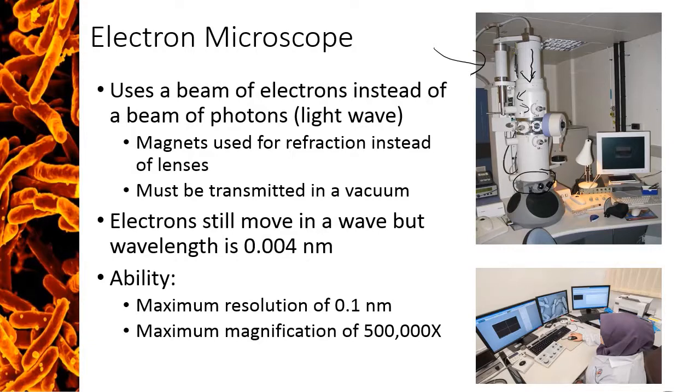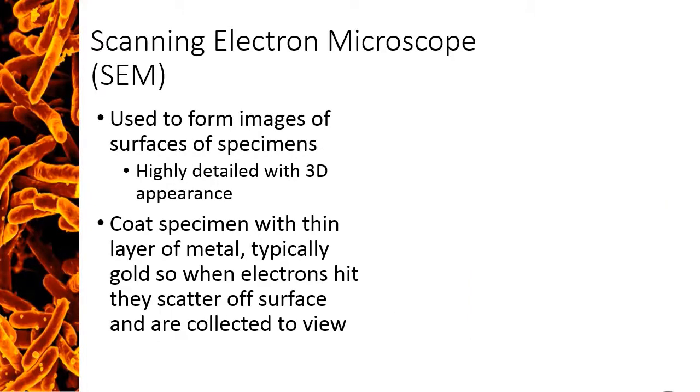There are two main types of electron microscopes, scanning electron microscopes or transmission electron microscopes. First, we'll look at a scanning electron microscope. Scanning electron microscopes are used to form images of specimen surfaces and produce very detailed 3D images. In order for an SEM to work, the specimen has to be coated in a thin layer of metal, typically gold. This allows the electrons to scatter off the surface when the electron beam hits the specimen, and the scattered electrons are collected by a detector to form the image.